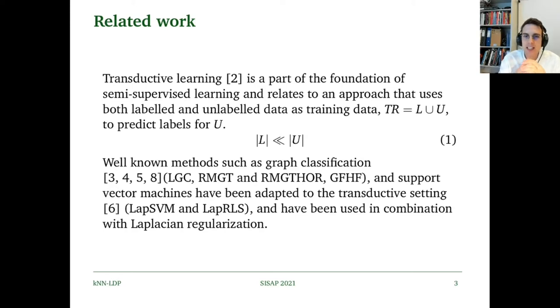In the transductive learning setting, we use both labeled and unlabeled training data to predict labels. As we can see in this equation, TR equals L union U, where L is the labeled part and U is the unlabeled part of the training data, and the goal is to predict the labels of U.